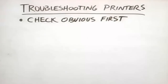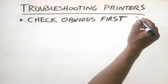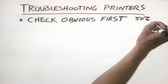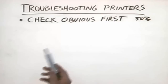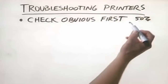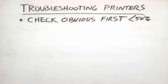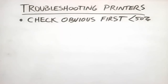The first thing we need to do, as with all the troubleshooting tips we've talked about in this course, is to check the obvious first. About 50% or so of the problems you encounter with printers will be caused by one of the things that we're going to talk about here. The other 50% you're going to have to do a little bit of work. What are some obvious things you should check for on a printer that's malfunctioning?